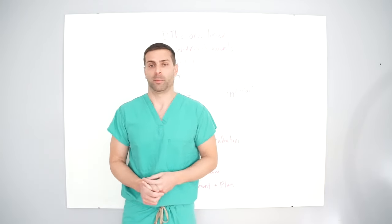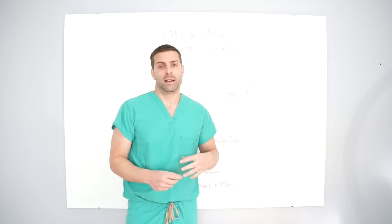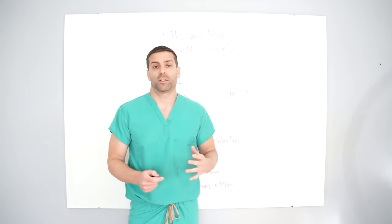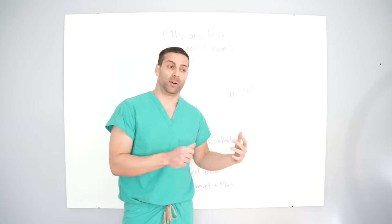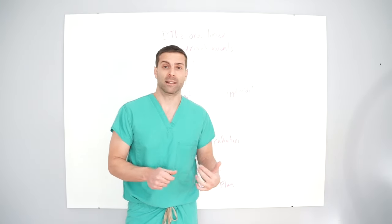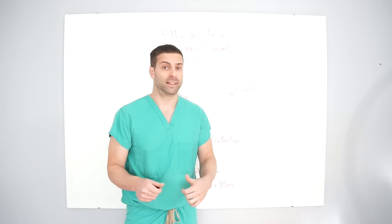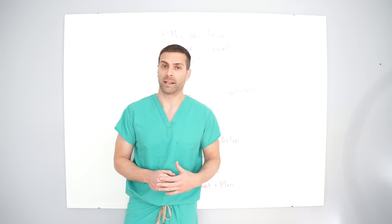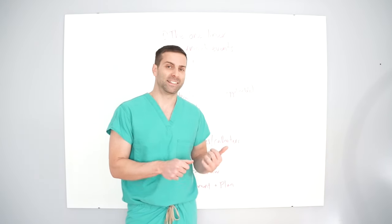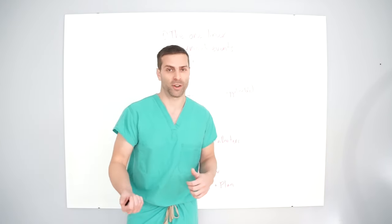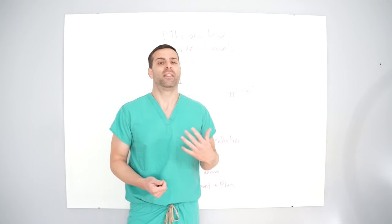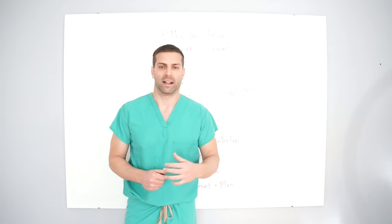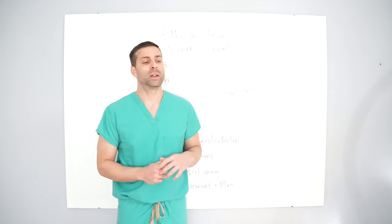For respiratory rate, you could tell me a range, but are they breathing 16 times a minute because the vent is set at 16, or are they spontaneously breathing 16 times a minute? Or is the vent set at 16 and they're actually breathing 34 times a minute over the vent? These are things you should be able to interpret and give me that information.